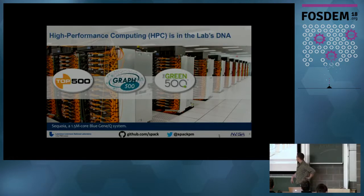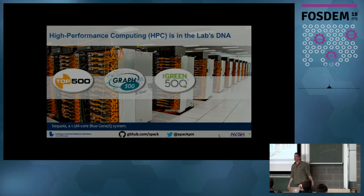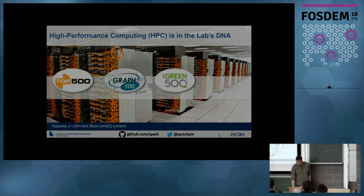This is Sequoia. It's a 1.5 million core system. The cases are off so you can see the network on there. These are the kinds of machines that we have to try to build for, and it's not pleasant. That's where SPAC has come from.